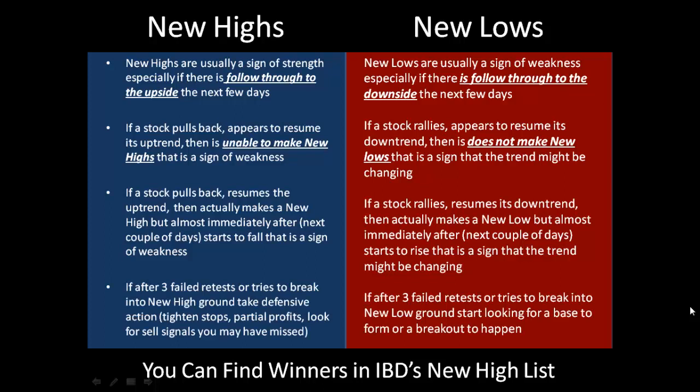Here's a common observation by seasoned traders. If a stock fails three times to break into new highs but is unable to do so, you want to take defensive action — tighten your stops, maybe take some partial profits, look for additional sell signals — because usually after about three failed attempts to break into new highs, the stock will have a significant pullback or correction.